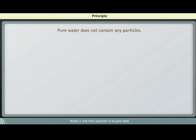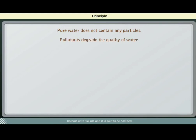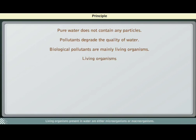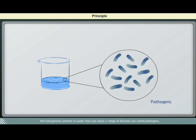Water is free from particles in its pure state. Substances that degrade the quality of water are called pollutants. The presence of a large amount of pollutants causes water to become unfit for use, and it is said to be polluted. Biological substances that cause water pollution are primarily living organisms — either microorganisms or macro-organisms. Micro-organisms present in water that can cause a range of diseases are called pathogens. The type and number of pathogens present indicate the type of pollutants and the level of pollution present.